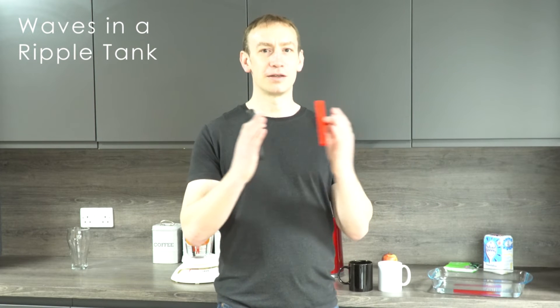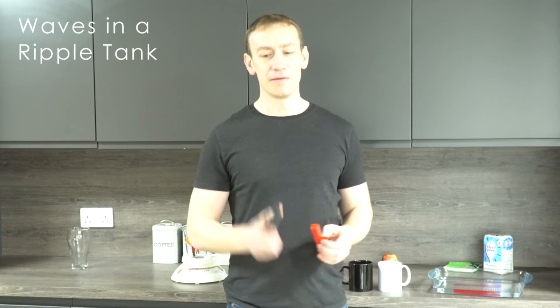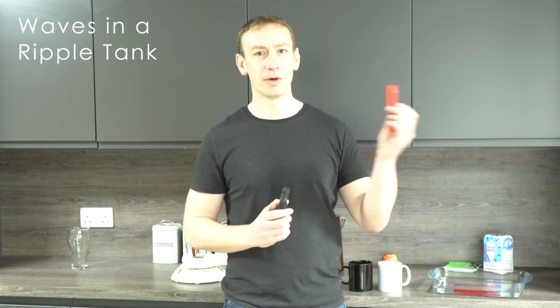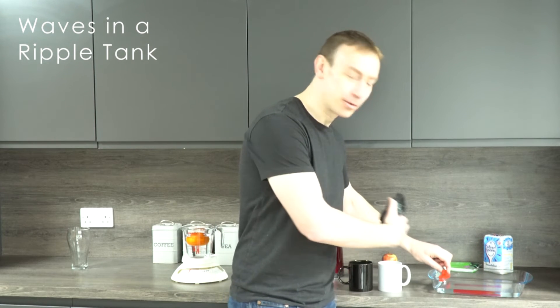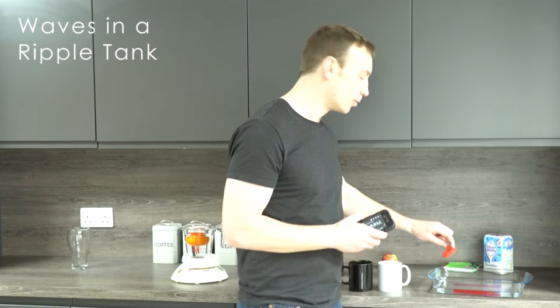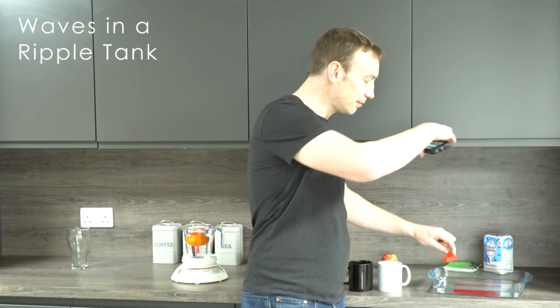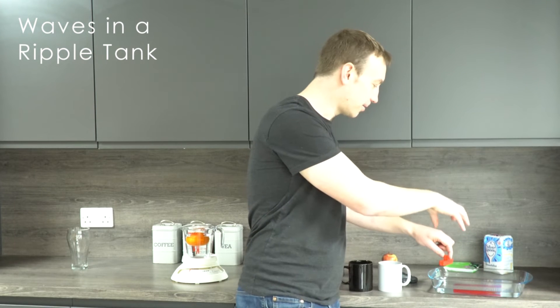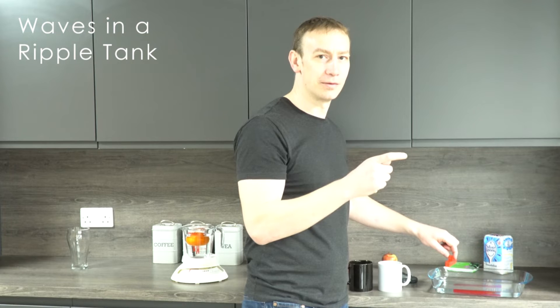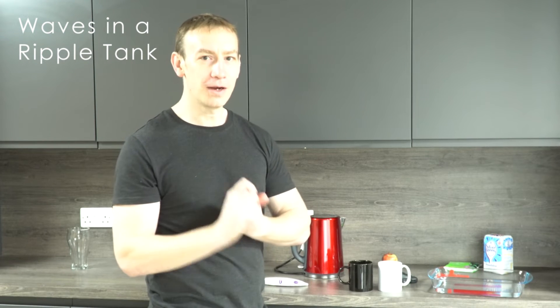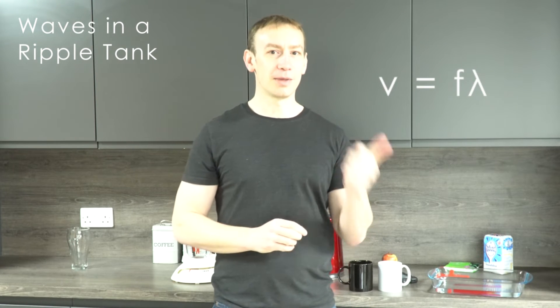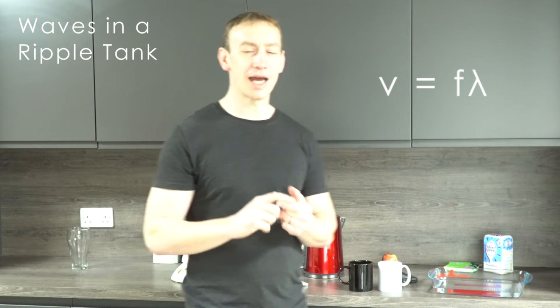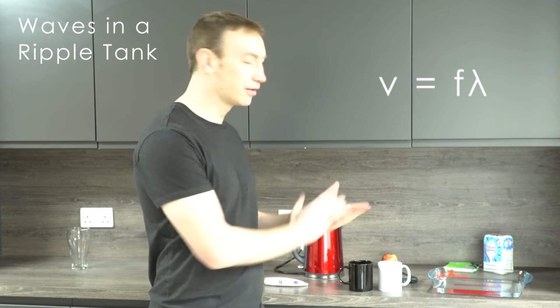We convert from beats per minute into hertz — beats per second — by dividing by 60. So 120 beats per minute equals 2 hertz. You could try 60 beats per minute (1 Hz), 90 beats per minute (1.5 Hz), and so on. If someone helps you, take a picture of the ripples and use the ruler to accurately measure the wavelength. Then use the equation v equals f lambda — multiply frequency in hertz by wavelength in metres to get wave velocity in metres per second.